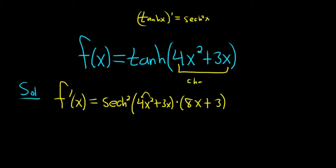You take the derivative of the outside. You don't touch the inside. You leave it untouched. Then you multiply by the derivative of the inside, which in this case is 8x plus 3.